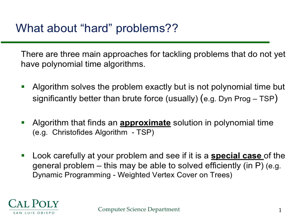Unfortunately, there are problems in computing for which we do not have a polynomial time algorithm. These are problems for which we still need to come up with algorithms to solve them, or at least to approximate them. There are basically three main approaches. The first approach is to try to find an algorithm that will solve the problem exactly, not in polynomial time, but significantly better than brute force most of the time. For example, applying dynamic programming to the traveling salesperson problem reduces it from factorial complexity to exponential, which is significantly better, but still not polynomial time.